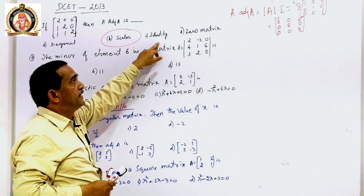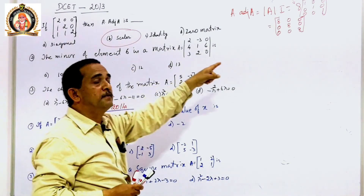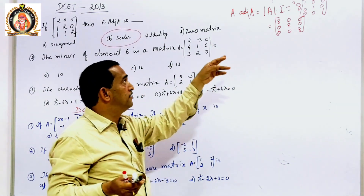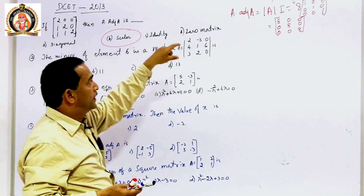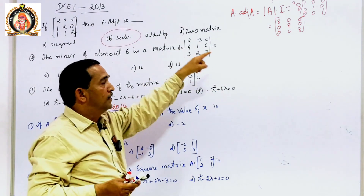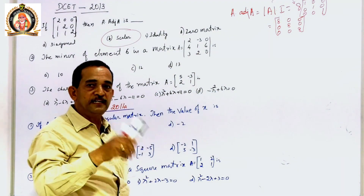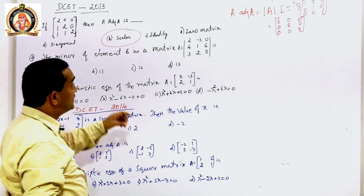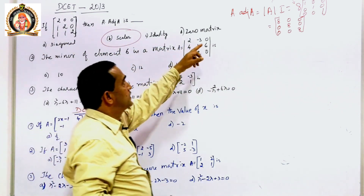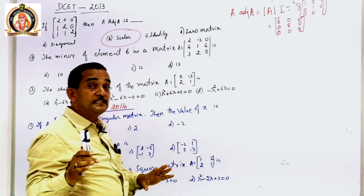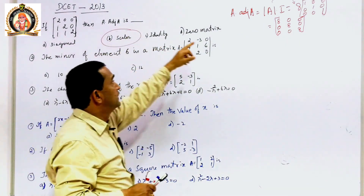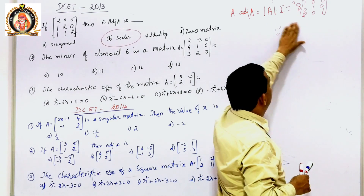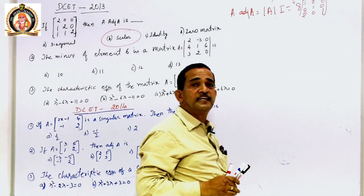It is not an identity matrix because the diagonal elements are not 1. It is not just a diagonal matrix either. Actually the answer qualifies as both diagonal and scalar matrix, but according to the problem we take it as scalar matrix — because every scalar matrix is a diagonal matrix, but not every diagonal matrix is a scalar matrix. These are things to be memorized.